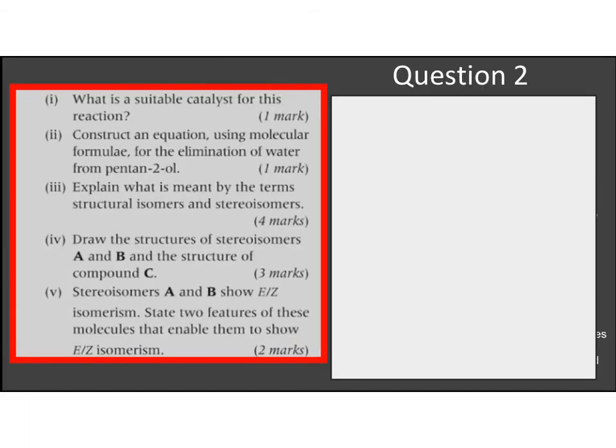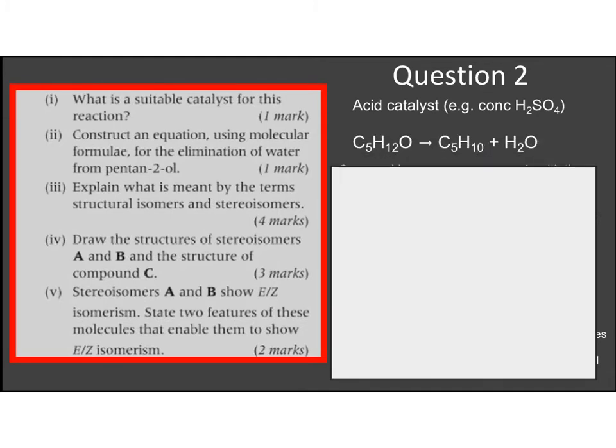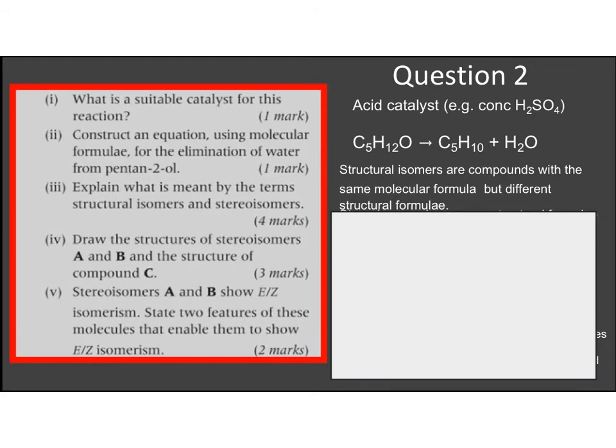Moving on to question two then. What's a suitable catalyst for an elimination reaction? It's going to be an acid catalyst. And the most common one used is concentrated sulfuric acid. We need to then construct that equation. So we are going from our alcohol to an alkene plus H2O. And it does state use molecular formula for that.